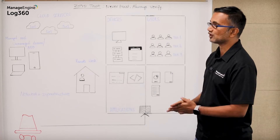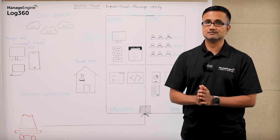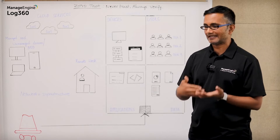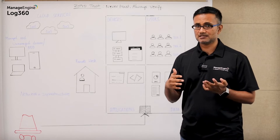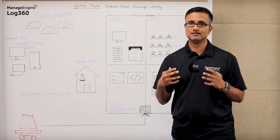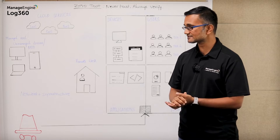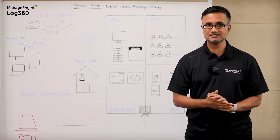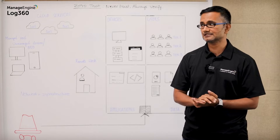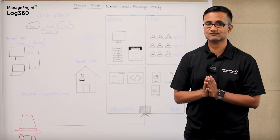User identity is paramount in the Zero Trust model. Nowadays, attackers are not going after the network — they're not doing network-based attacks so much anymore. They're going after user identities and looking at new ways to compromise them. So you've got to manage your user identities very, very well.